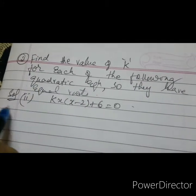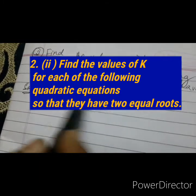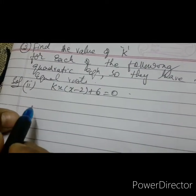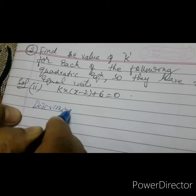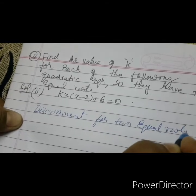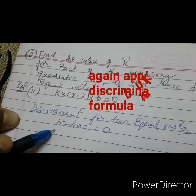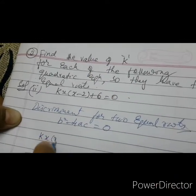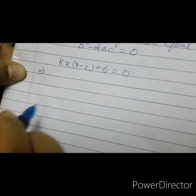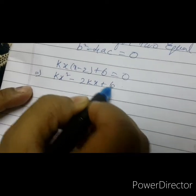Now second problem, second bit. Find the value of K for each of the following quadratic equations so that they have two equal roots. They are mentioning two equal roots, and you know the discriminant for two equal roots is b squared minus 4ac equals to 0. From our question: Kx(x minus 2) plus 6 equals to 0. Now open the brackets. It should be in quadratic form: K into x squared minus 2Kx plus 6 equals to 0.